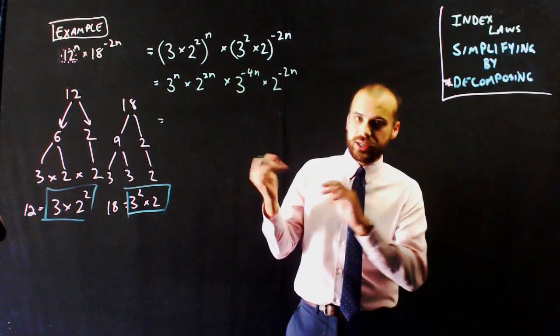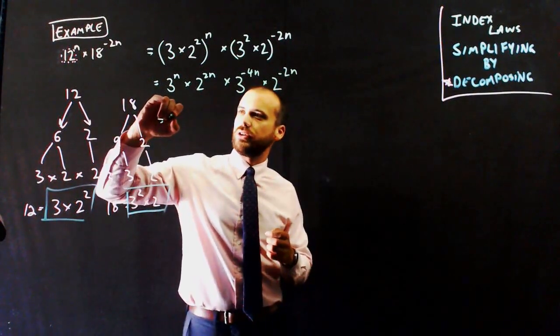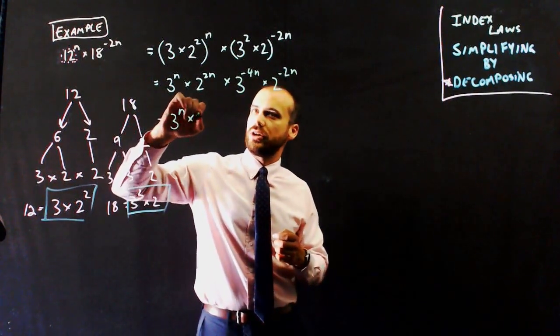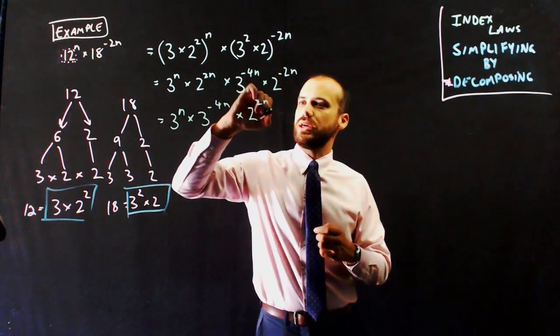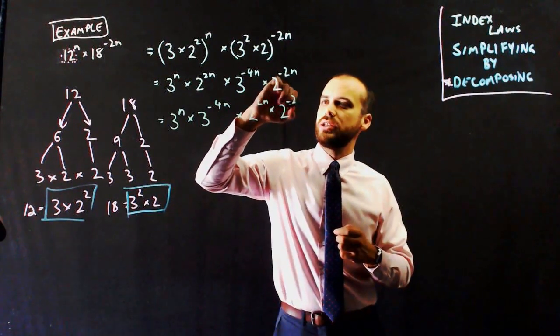I can rearrange that, bring the 3's together, bring the 2's together. I've got 3 to the n times 3 to the negative 4n, times 2 to the 2n, times 2 to the negative 2n.